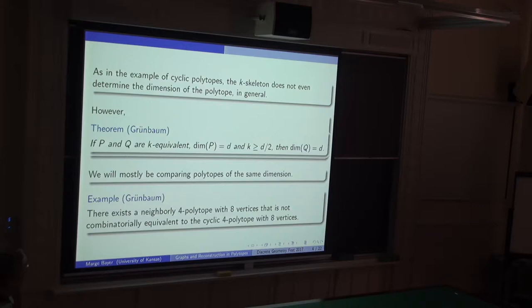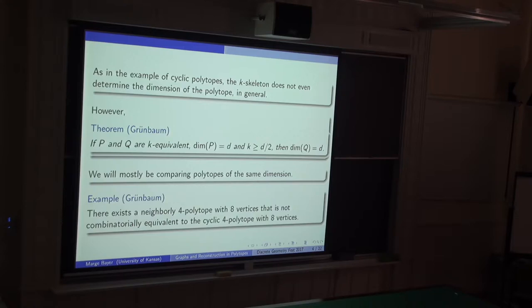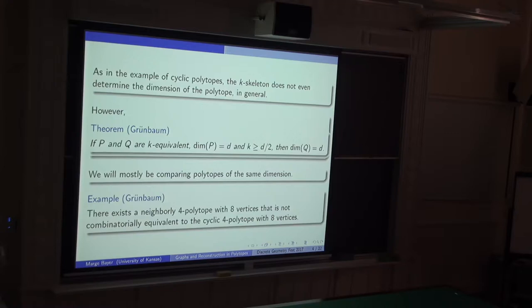For much of this talk we'll be restricting ourselves to comparing polytopes of the same dimension. One example useful to keep in mind is the four-dimensional case: if you're looking at a k-skeleton of dimension two or higher things work out, but if you just look at the one-skeleton it certainly does not determine the combinatorial type. For example, if the one-skeleton is the complete graph, we have the cyclic 4-polytope with 8 vertices, but there exists a different neighborly 4-polytope with 8 vertices that is not combinatorially equivalent.